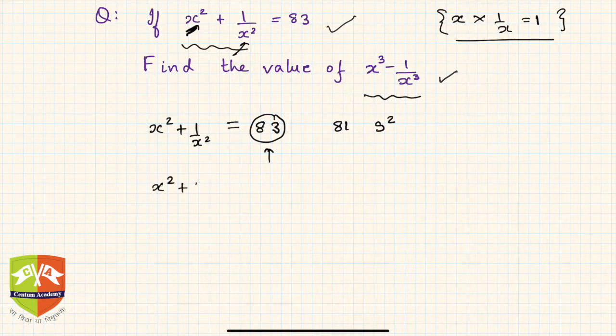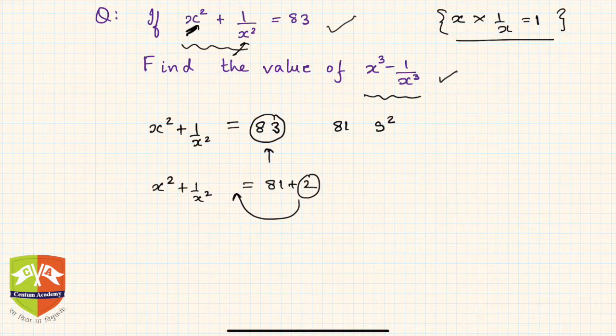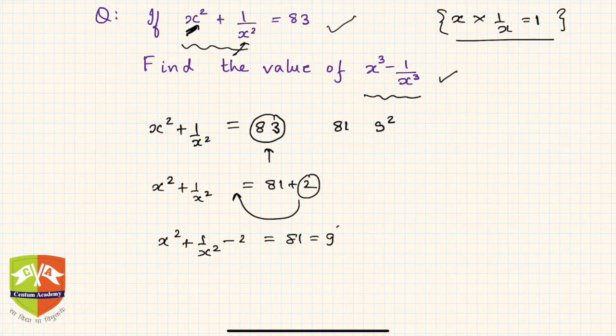Now this 2 you take it on the left-hand side so that only the perfect square term stays on the right-hand side. So x² + 1/x² - 2 = 81, which is equal to 9².